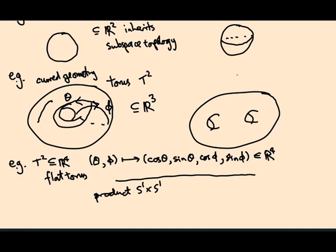We've now seen a bunch of constructions of topological spaces that give us a huge variety of spaces: subspaces, products, and metric spaces. Next I'm going to talk about properties of topological spaces like connectedness and compactness. Finally, there'll be another construction we haven't considered yet — the quotient construction — which is extremely useful, and I'll talk about that later.